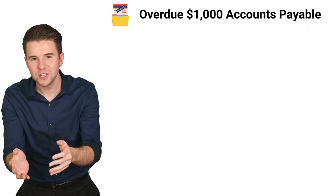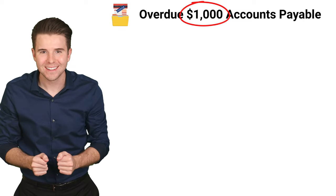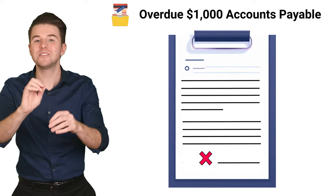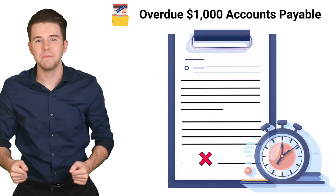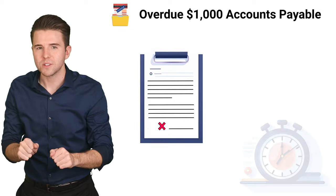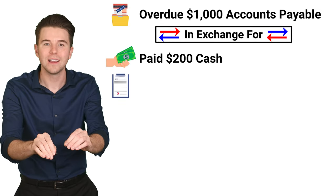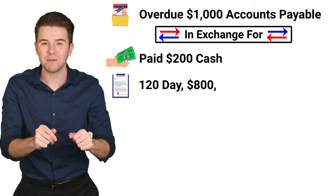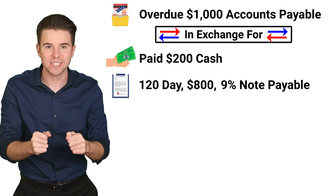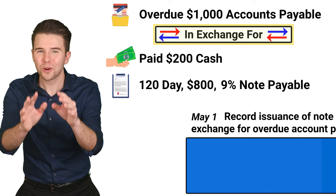Let's do an example. Assume that we are overdue on a $1,000 accounts payable and our supplier asks us to sign a note payable in exchange for giving us more time to pay. On May 1st, we agree to pay the supplier $200 cash now and sign a 120-day $800 note payable with 9% interest in exchange for our accounts payable.